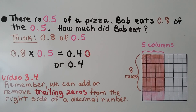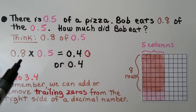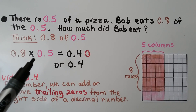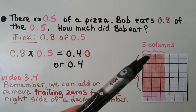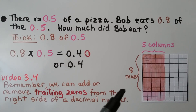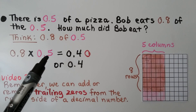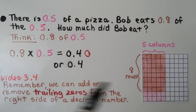There is 5 tenths of a pizza. Bob eats 8 tenths of the 5 tenths. How much did Bob eat? We think: 8 tenths of 5 tenths, that's 8 tenths times 5 tenths. We make 5 pink columns coming down, or whatever color you choose — that's for the second factor. Then for the first factor, we make 8 rows.